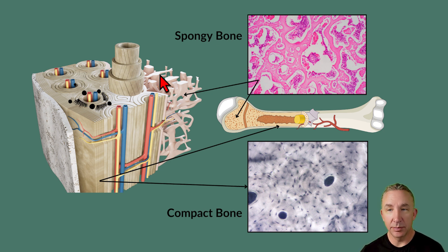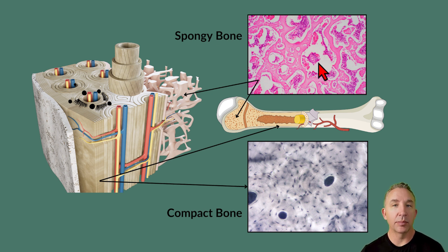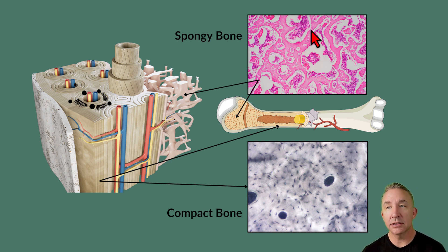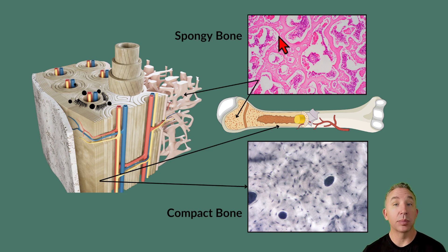Spongy bone tends to be found more in the epiphysis, while compact bone is found more in the diaphysis for strength. Spongy bone is porous — on this slide at lower magnification, you can see pinkish rivers, and the darker purple inside is red bone marrow filling those spaces, just like water fills a sponge. Looking at the lighter pink rivers, that's all spongy bone. At higher magnification in the middle you'd see osteocytes in the lacunae, and toward the edges you'd see osteoblasts contributing to the formation of structures called trabeculae.